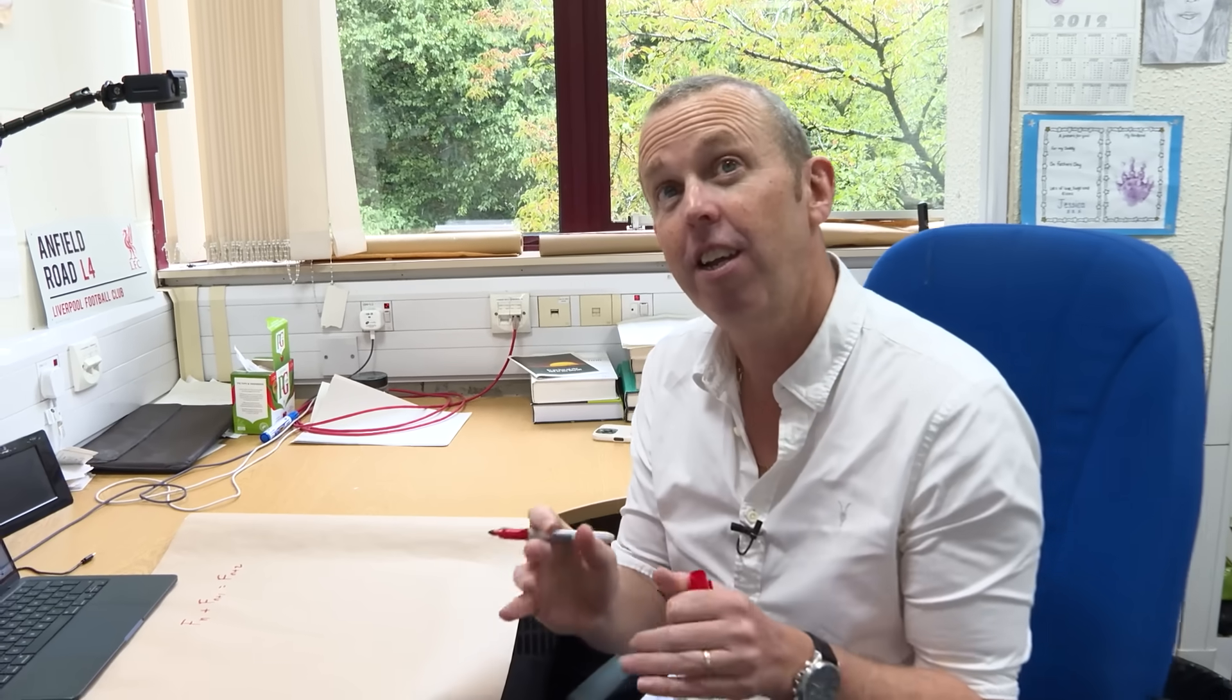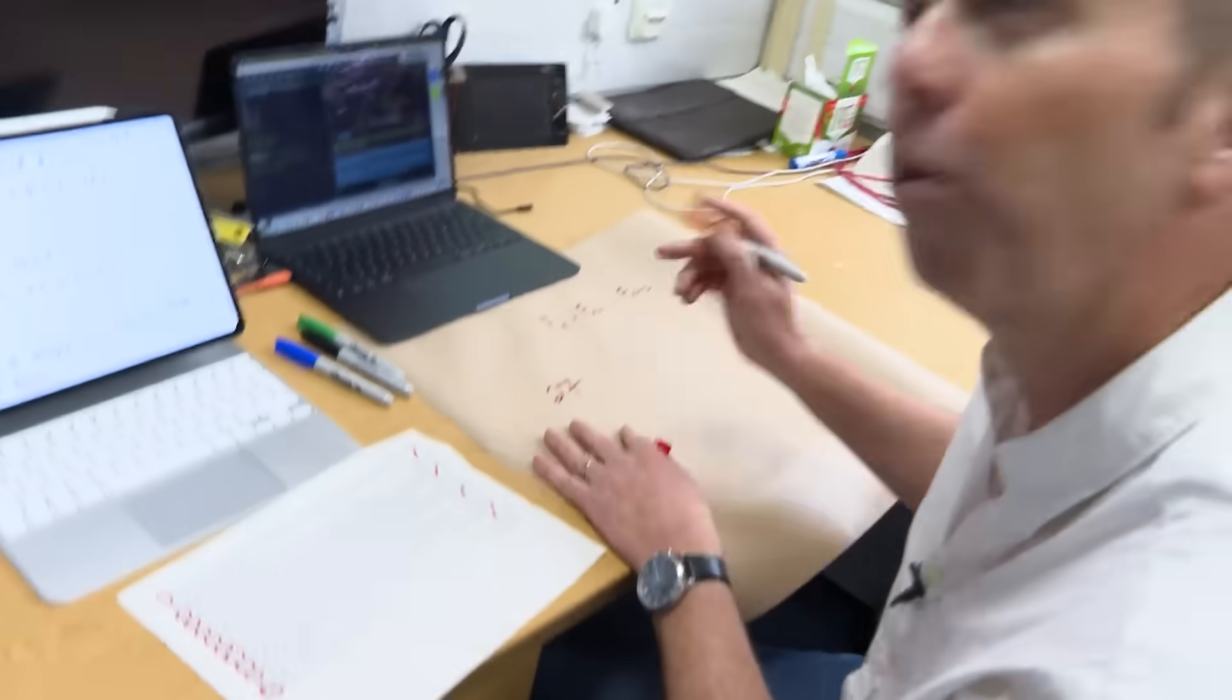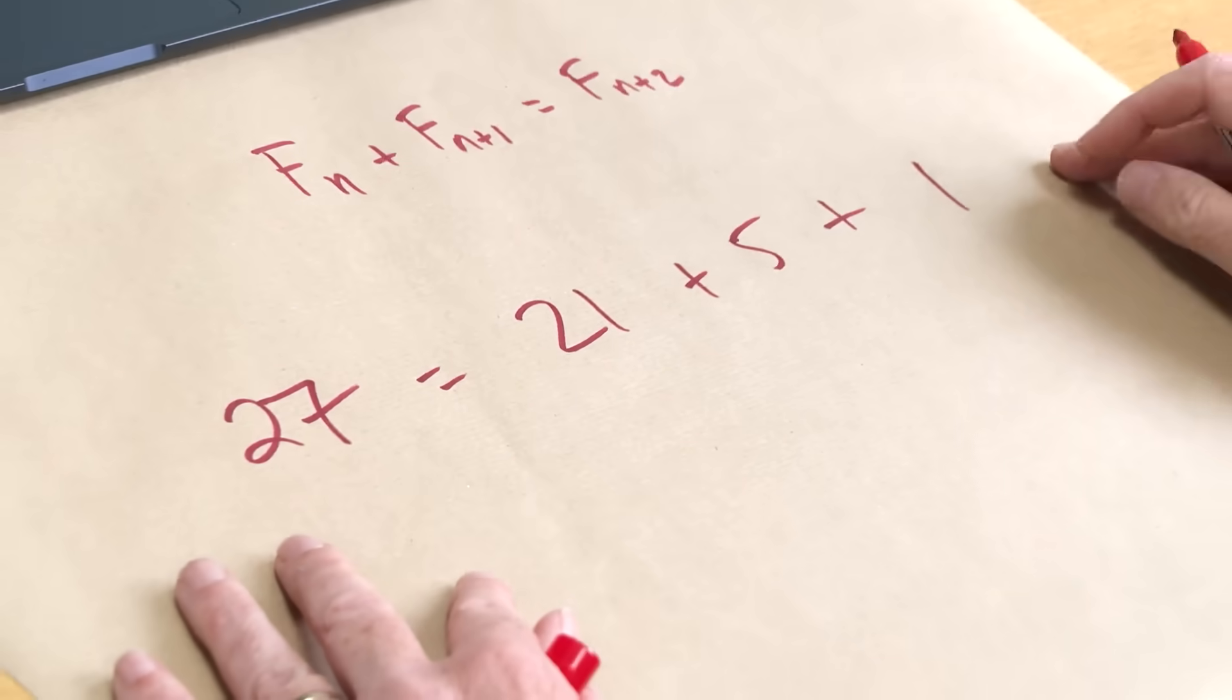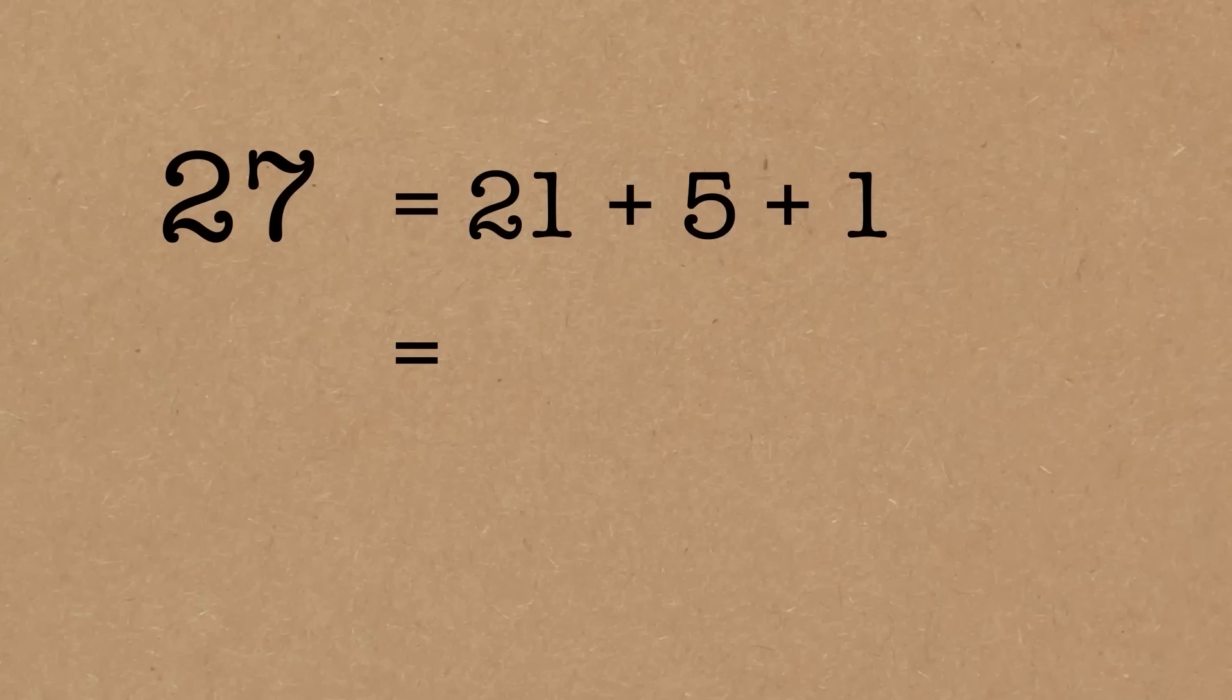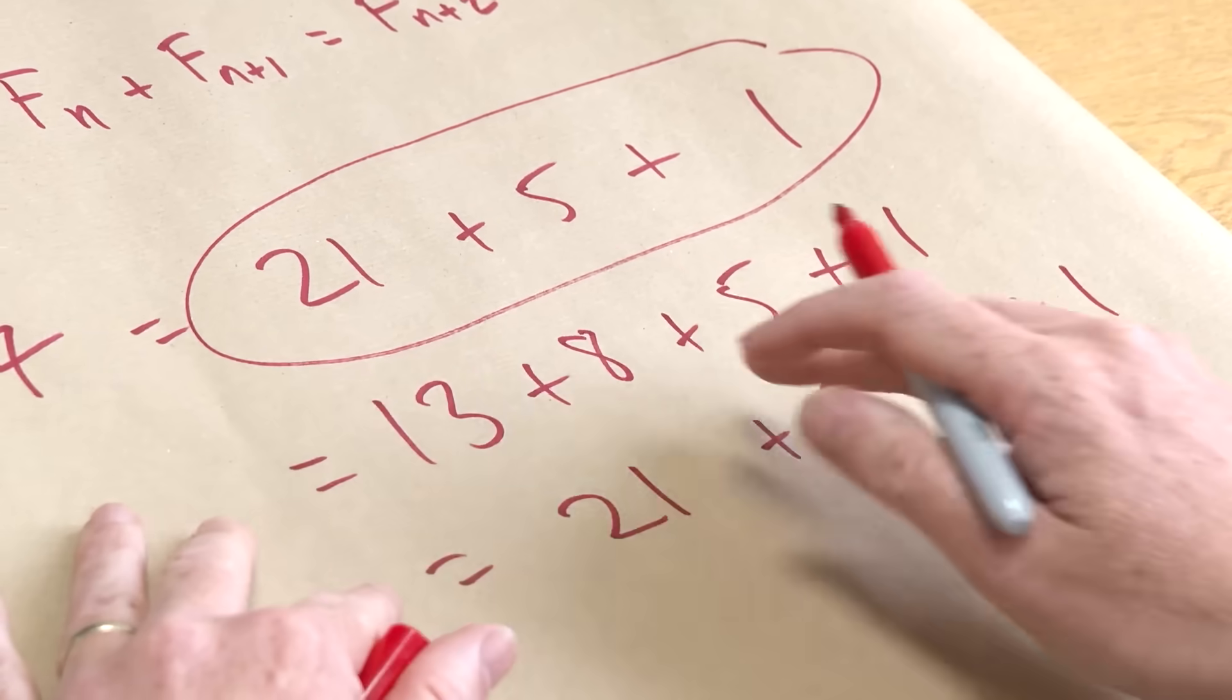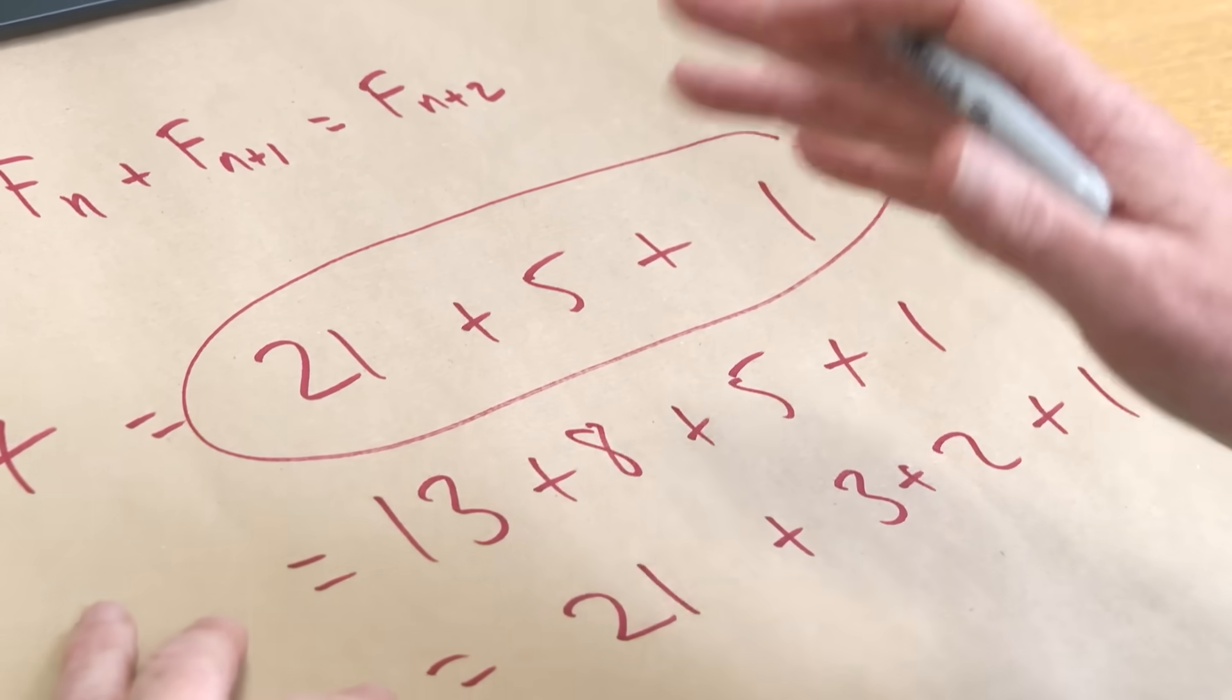So let's have a look at any number. It can be written in terms of Fibonacci numbers. Take the number 27 for example. I can write the number 27 as 21 plus 5 plus 1, right? I can certainly do that. Yeah. And these are all Fibonacci numbers. This isn't unique. There's other ways I could write 27 in terms of Fibonacci numbers. I could write 13 plus 8 plus 5 plus 1. I could do 21 plus 3 plus 2 plus 1, right?